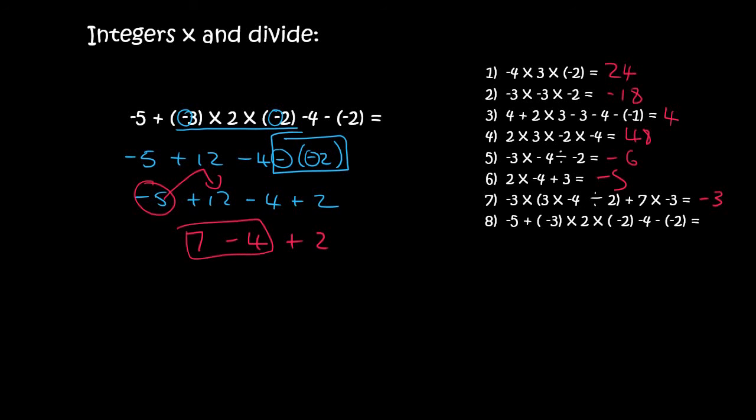7 minus 4 is 3, and 3 plus 2 is 5. And that's it for this lesson. Thank you for watching.